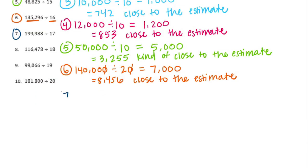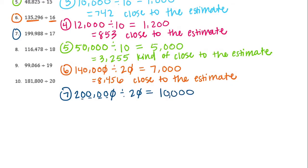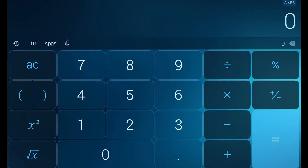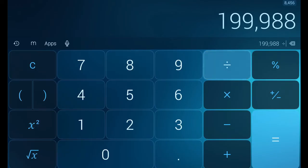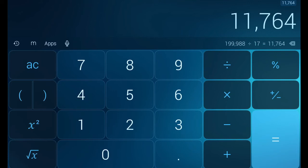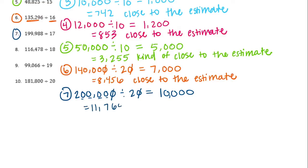Number 7: 199,988 divided by 17. I'm gonna make that 200,000 divided by 20. Canceling out the zeros — 2 divided by 2 is 1, and then I have 1, 2, 3, 4 zeros — so my estimate is 10,000. The actual quotient: 199,988 divided by 17 is 11,764. That's pretty close to our estimate of 10,000.